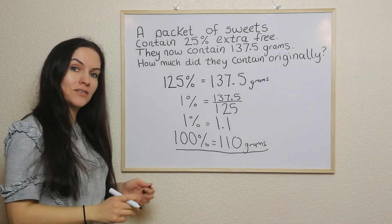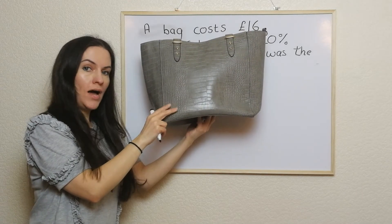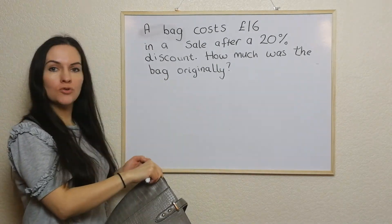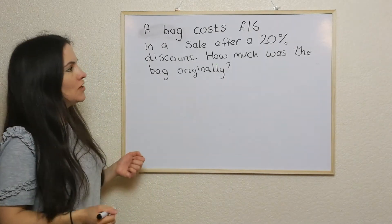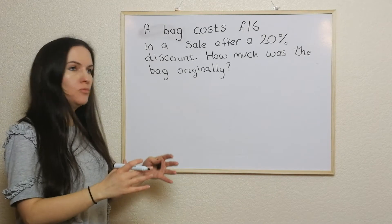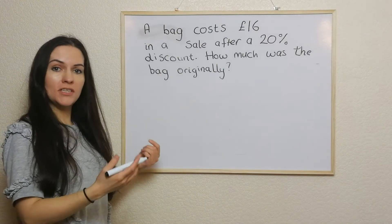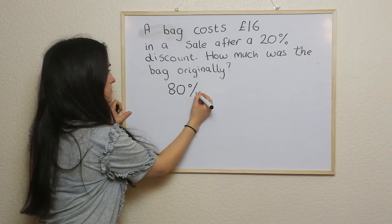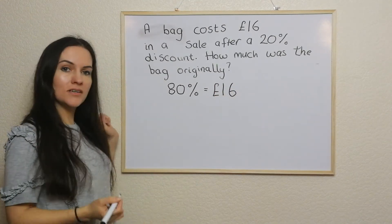So now we're going to try another one — it's worded slightly differently. This time I've got a handbag in the sale and the bag costs £16. This is after a 20% discount, and what I want to know is how much was the bag originally. The full normal price is 100%, but we've had a 20% discount, so it's 100 take away 20, giving us 80%. So 80% equals £16.